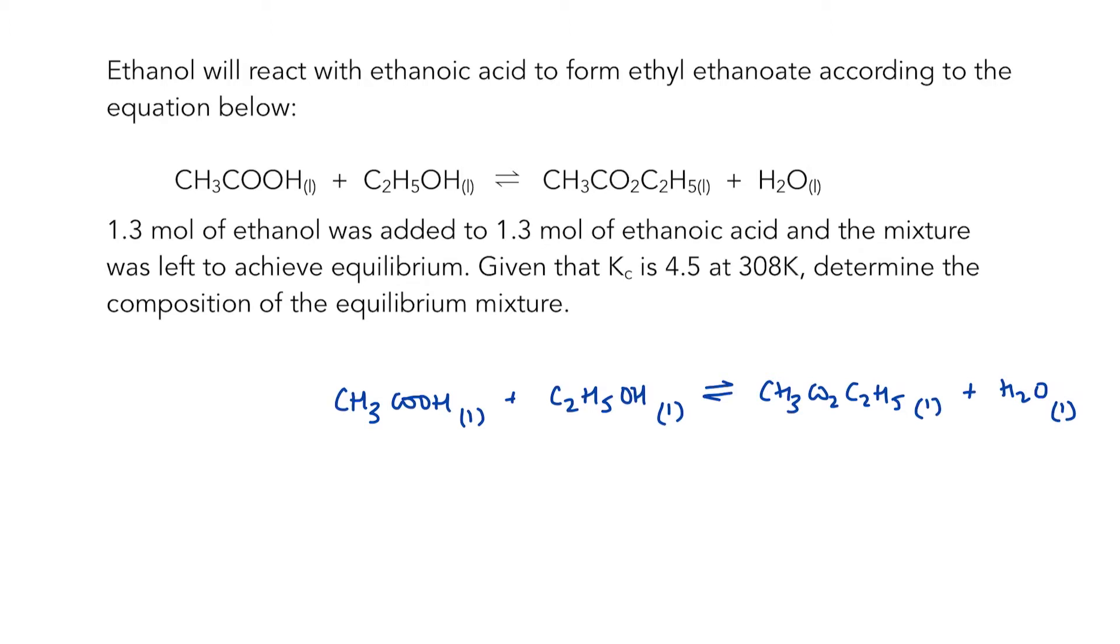Ethanol is reacting with ethanoic acid to form an ester and water. We know that we start with 1.3 moles of ethanol and 1.3 moles of ethanoic acid. We have a value for Kc. What we don't seem to know is the equilibrium concentration of anything, either our reactants or our products. So that is what we need to figure out.